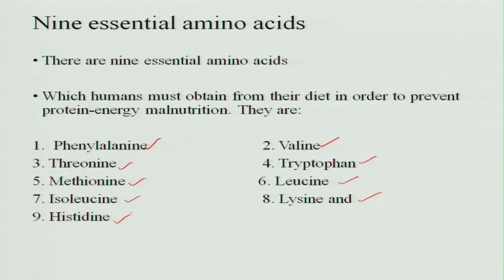All these 9 essential amino acids are present in animal foods. But when you take plant foods, there are some deficient amino acids out of these. Therefore, when all 9 essential amino acids are present in a food it is called a complete protein, meaning it has the function of body building, repair, and maintenance. When something is deficient, we have to supplement the amino acids.